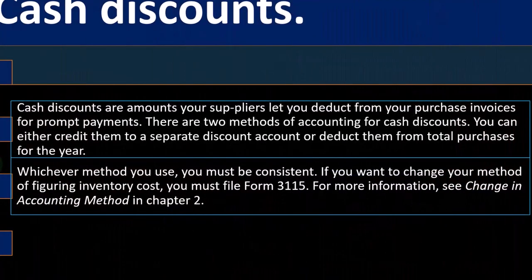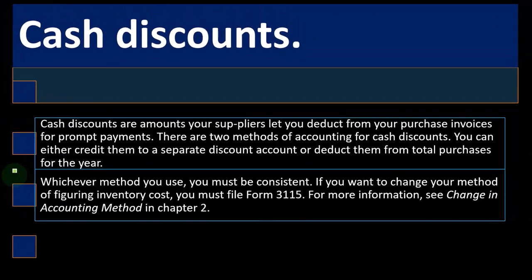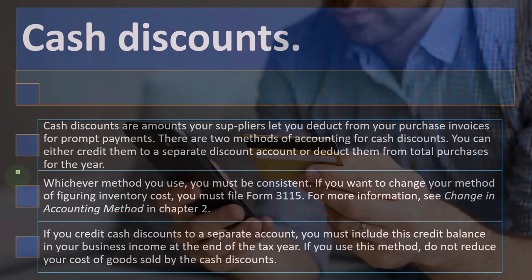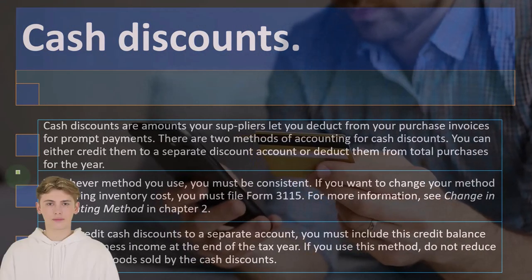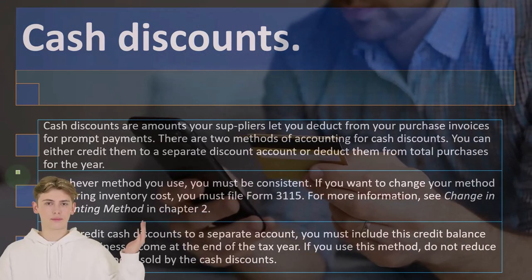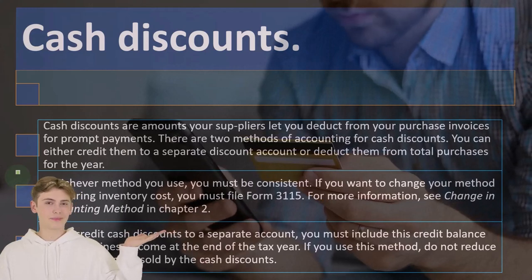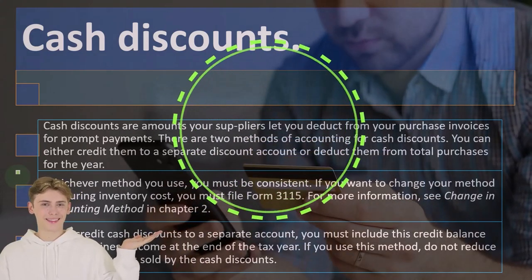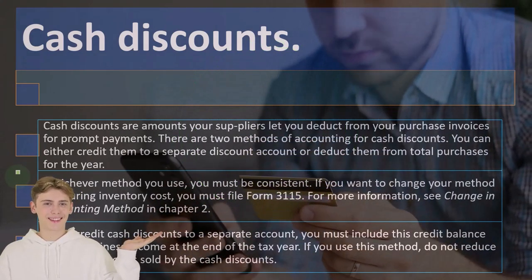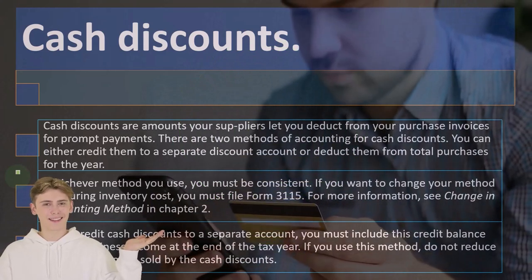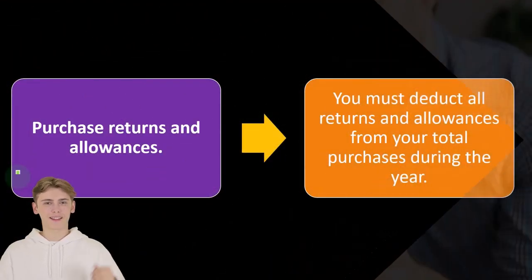If you credit cash discounts to a separate account, you must include this credit balance in your business income at the end of the tax year. If you use this method, do not reduce your cost of goods sold by the cash discount.